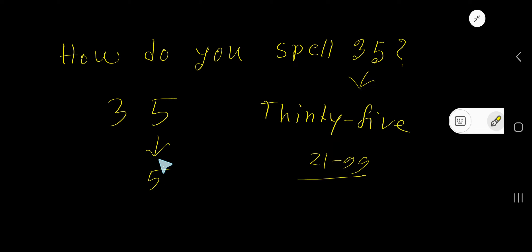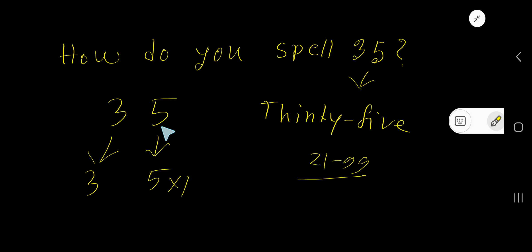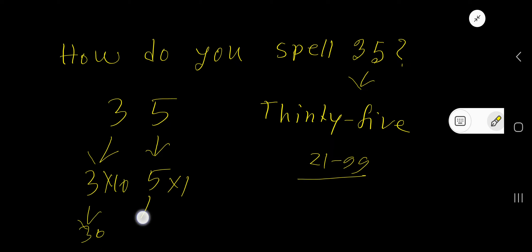The place value of 5 is 5, and the place value of 3 is 3. To find the place value of 5, you multiply by its position — 5 is in the ones place, and 3 is in the tens place. So we get 5 here and 30 here, giving us 35.